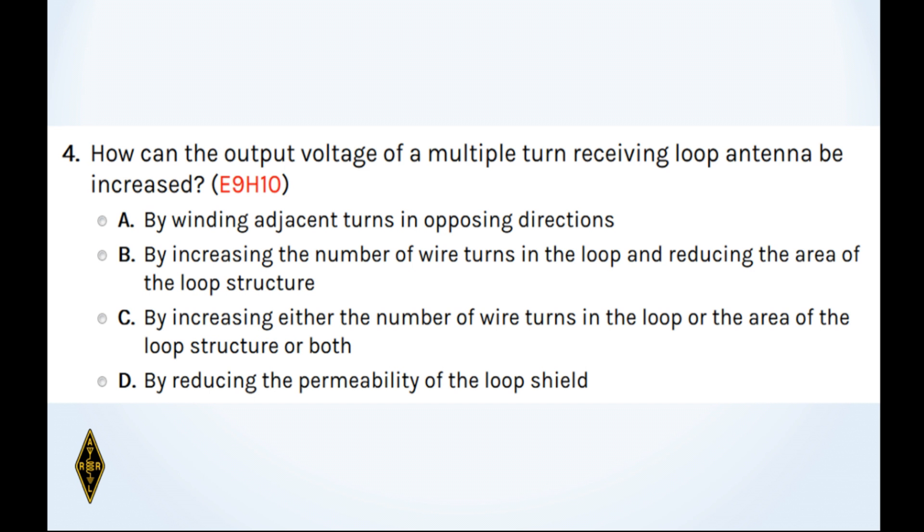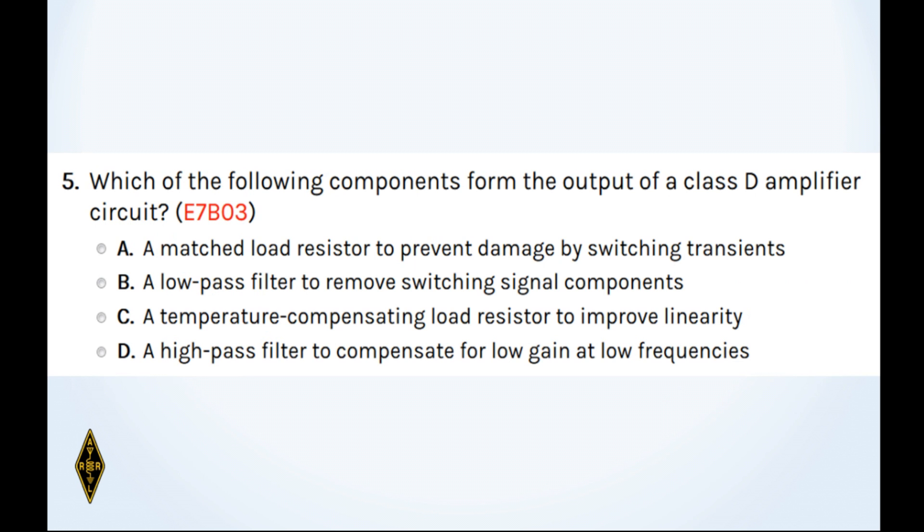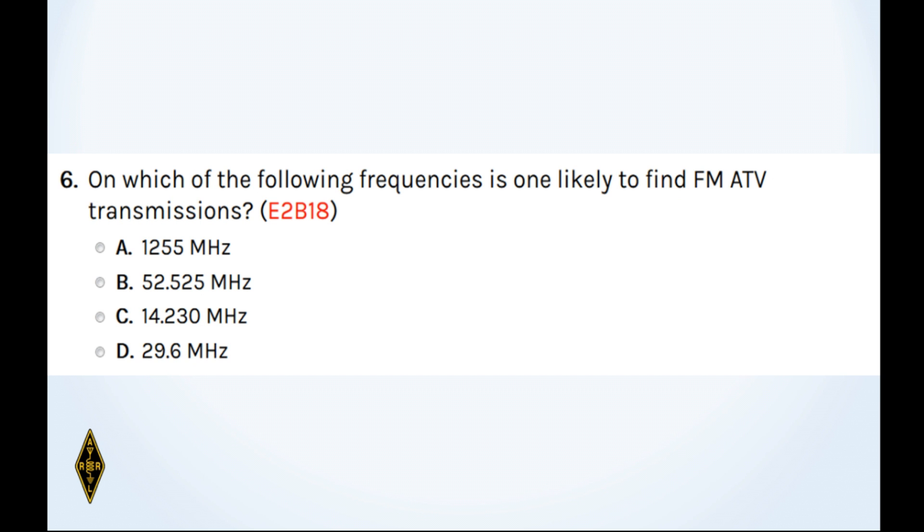Question number five. Which of the following components form the output of a class D amplifier circuit? And question 6, on which of the following frequencies is one likely to find FM ATV transmissions? And question 7, what do the terms L-band and S-band specify with regard to satellite communications?